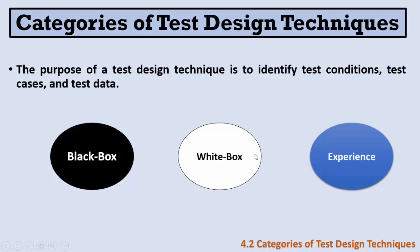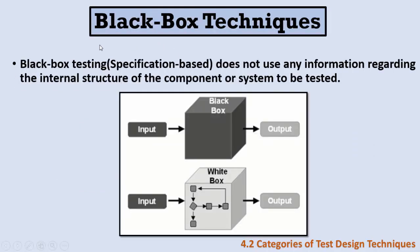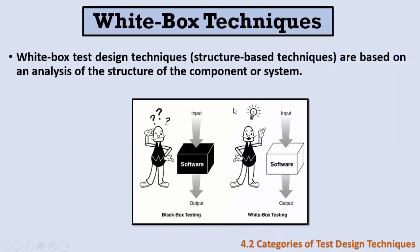We have three major categories: black box techniques, white box techniques, and experience-based techniques. Black box techniques, also called specification-based techniques, work by dividing some input to our system without knowing what happens inside. We just wait for the output — if the output matches the expected output, the test case passes; if different, there are bugs in the software. We don't use any information regarding the internal structure of the system under test.